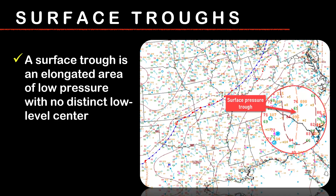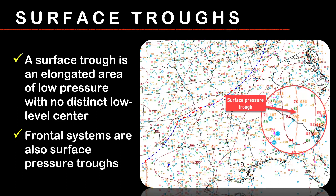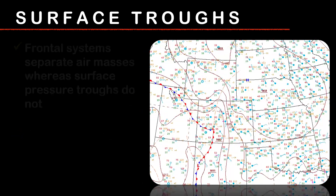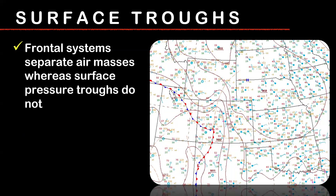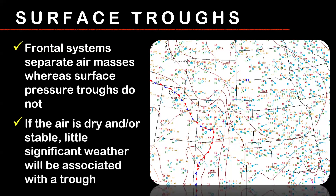Forecasters like to point out surface pressure troughs. Frontal systems are also surface pressure troughs, but they separate air masses. Pressure troughs, on the other hand, do not — they're not a separation of an air mass. If the air is on the drier side, which it typically is in these situations, most of the time a pressure trough will have little or no significant weather associated with it and is usually pretty harmless in most cases.